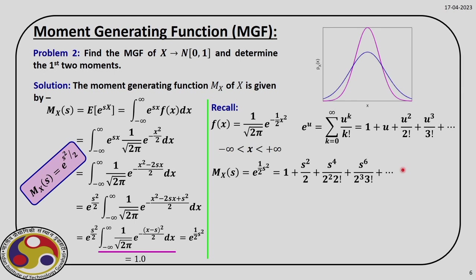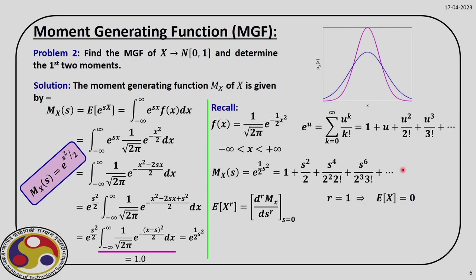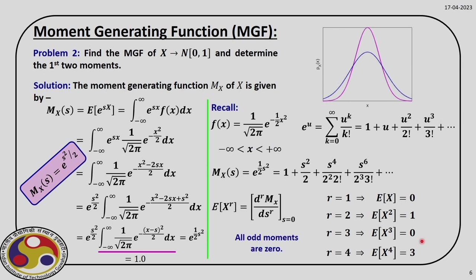To find the rth moment, we differentiate this function r times and then put s equal to 0. For r equal to 1, the first moment is 0 — consistent with our starting point since this is a standard normal. For r equal to 2, the second moment is 1, also consistent. For r equal to 3, the moment is 0, and for r equal to 4, the value is 3. For a standard normal distribution, all odd moments are 0, which is confirmed by the moment generating function.